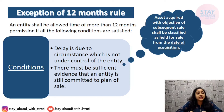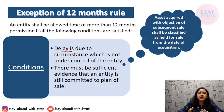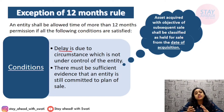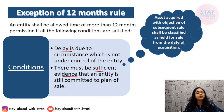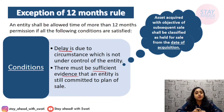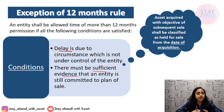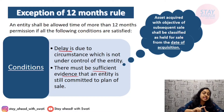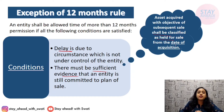There is an exception to the 12-month requirement. In some cases, an entity will be allowed to complete the sale in more than 12 months, but only when: first, the delay is due to circumstances which were not in the entity's control; and second, there must be sufficient evidence that the entity is still committed to the plan of selling the asset. Both conditions must be satisfied. If you have acquired any asset for the sole purpose of reselling, it shall be classified as held for sale from the date of acquisition.